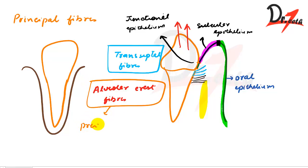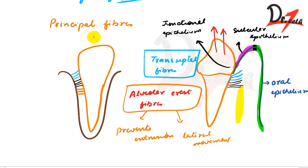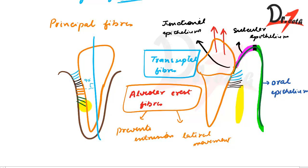Next we have the horizontal group of fibers. These extend at right angles to the long axis of the tooth, making a 90-degree angle. Then we have the oblique fibers — these are the largest group of periodontal ligament fibers.